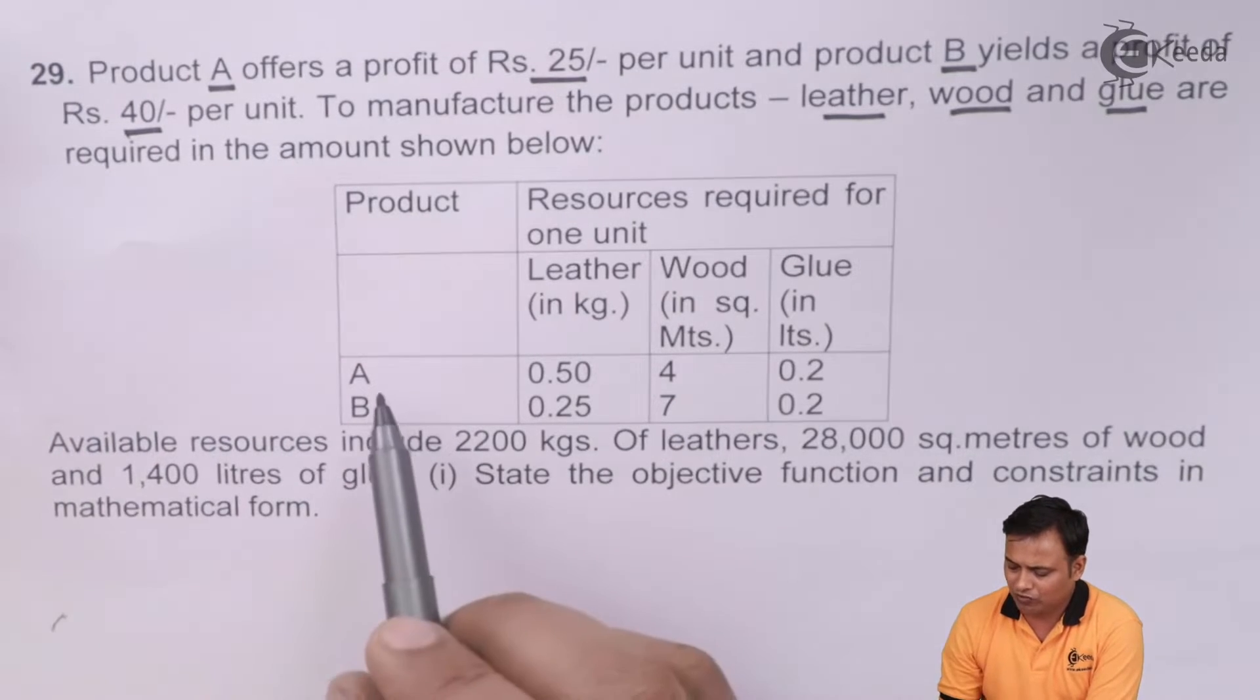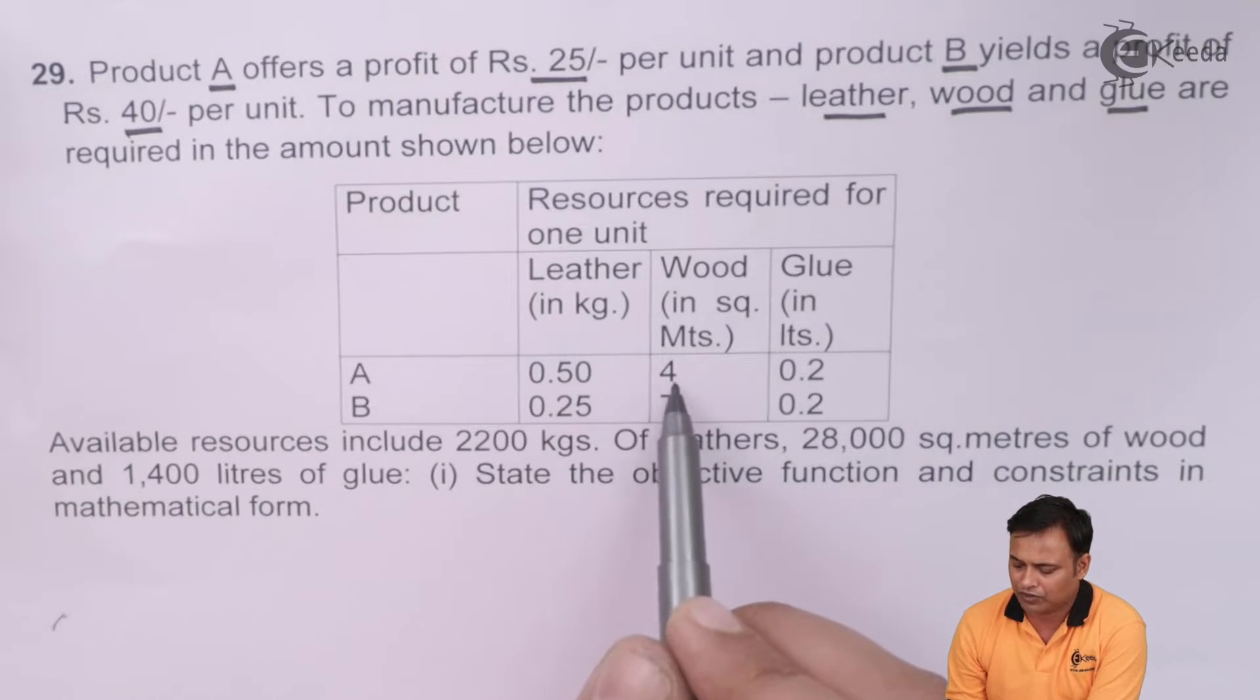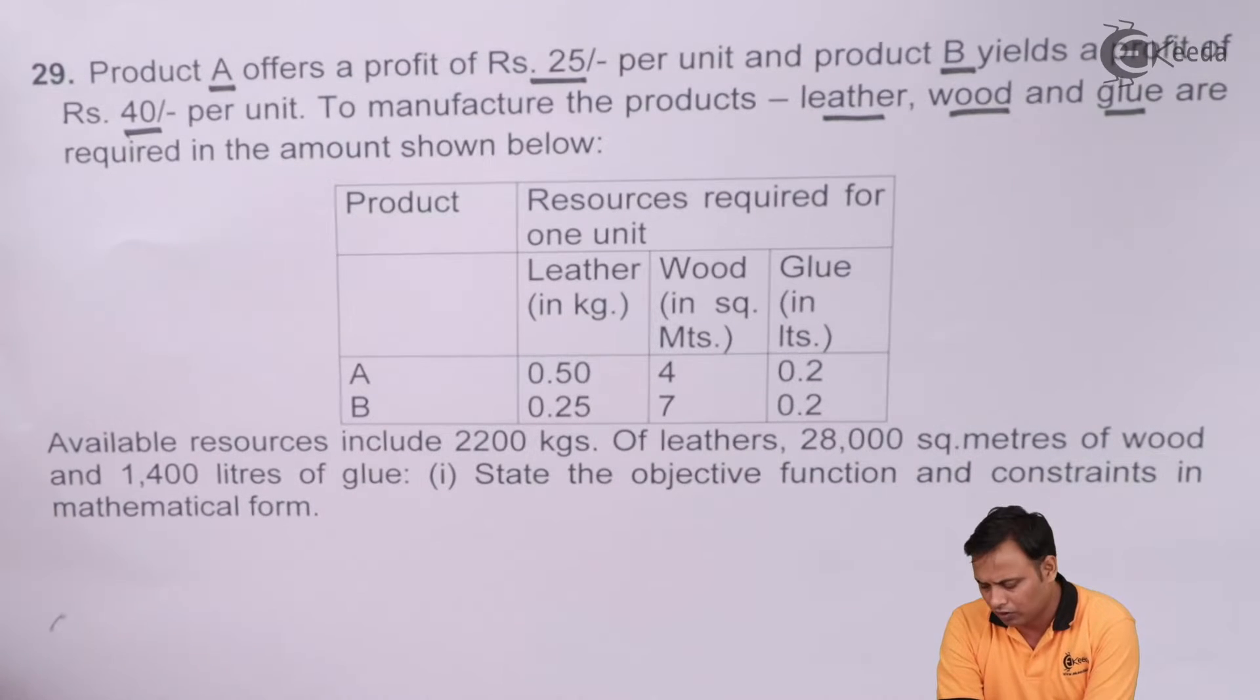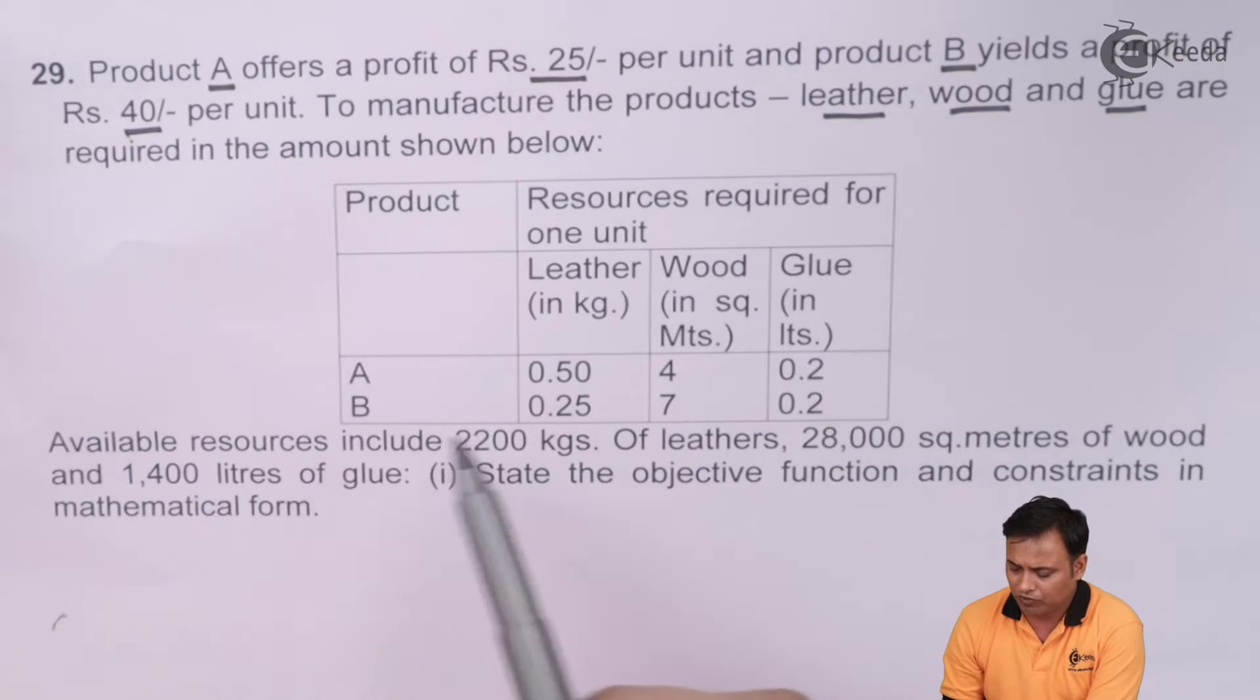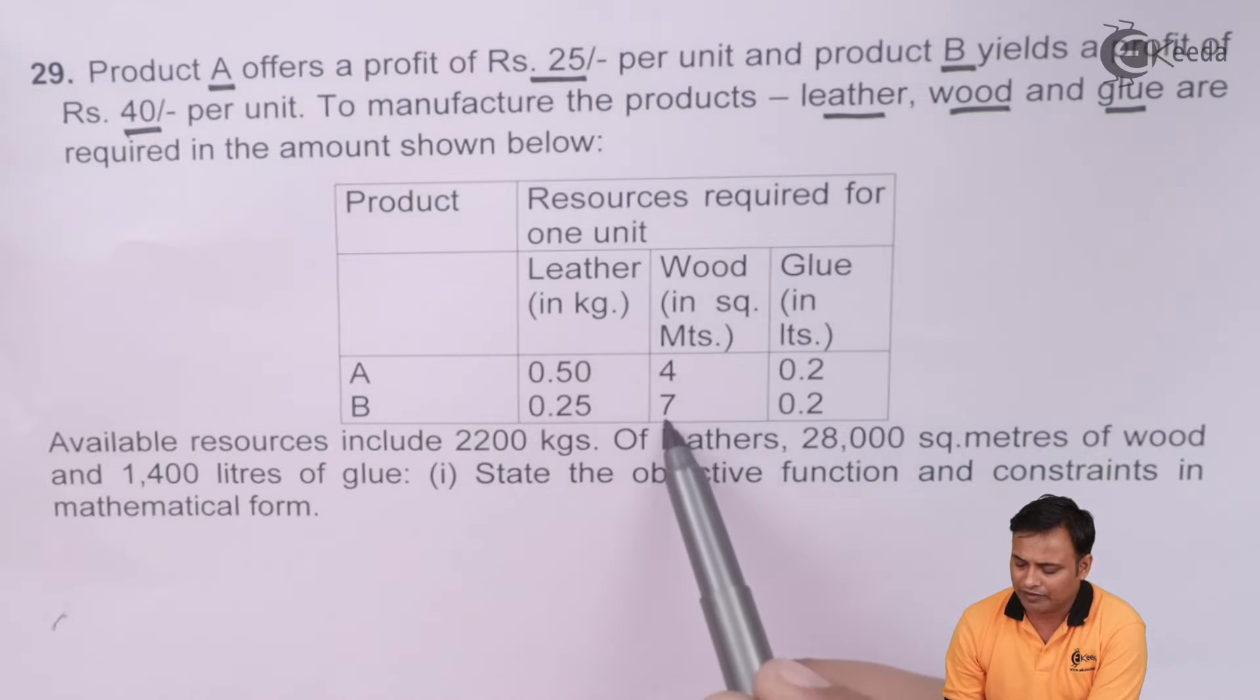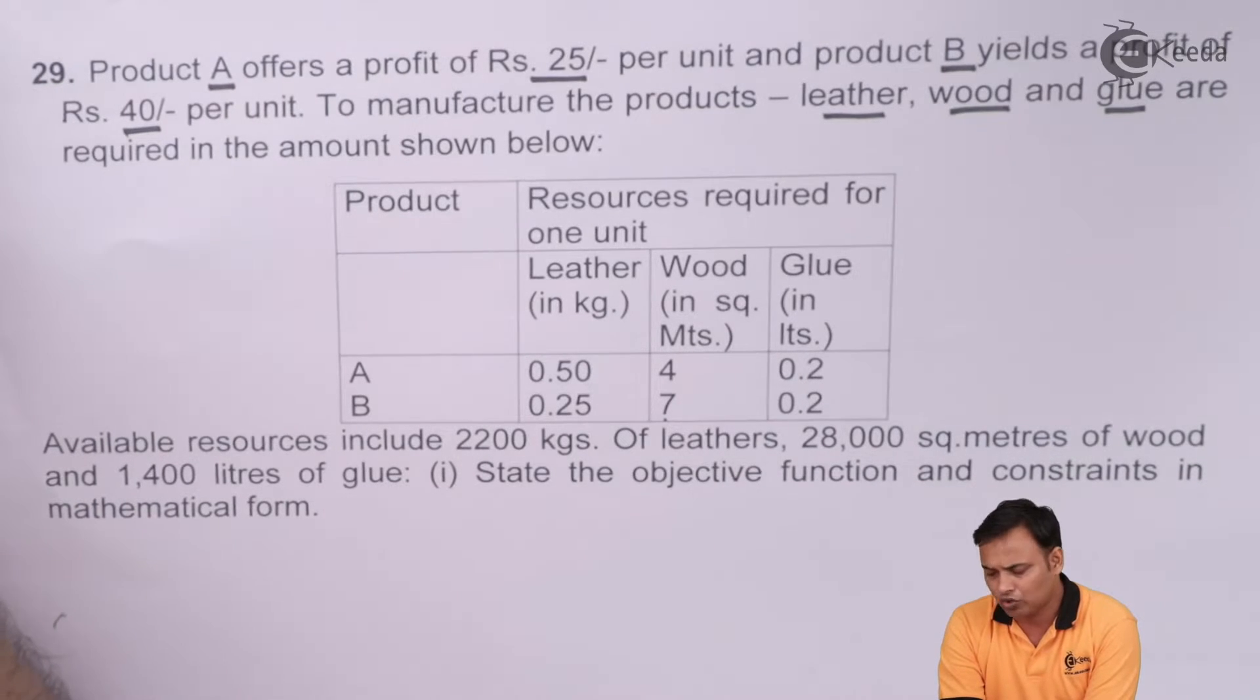For product A, we require 0.5 kg of leather, 4 square meters of wood and 0.2 liters of glue. For product B, we require 0.25 kg of leather, 7 square meters of wood and 0.2 liters of glue.